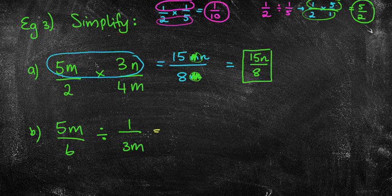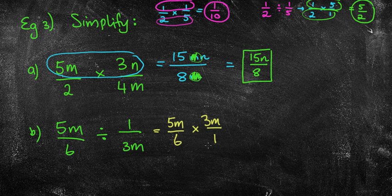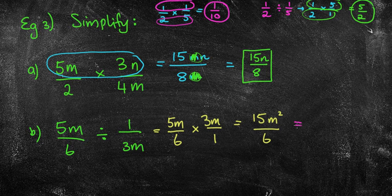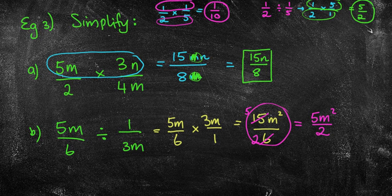The next fraction question is even more challenging. It's a division, so we flip the second fraction and change to multiplication. We get 5 times 3 is 15, m times m is m squared, and 6 times 1 is 6 — giving 15m squared over 6. Getting that answer would be great, but you can also simplify by noting 3 divides into both: 3 into 6 is 2 and 3 into 15 is 5, giving the simplified answer 5m squared over 2.